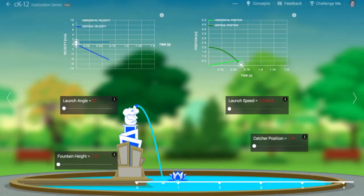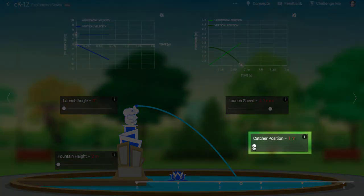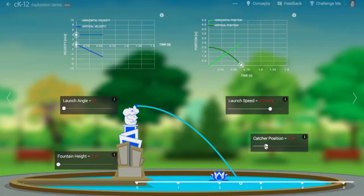We can adjust this up to 4 meters per second and see what happens. Notice that the water lands at different positions. We can practice calculating where the water should land and then move the catcher to see if we are right. So how do we make these calculations?